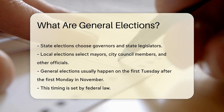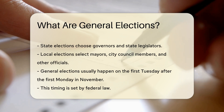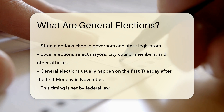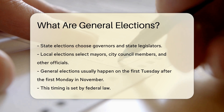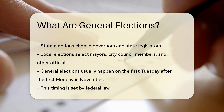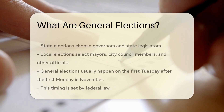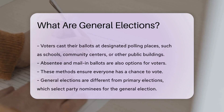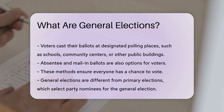General elections usually happen on the first Tuesday after the first Monday in November. This timing is set by federal law. Voters cast their ballots at designated polling places, which can be schools, community centers, or other public buildings.